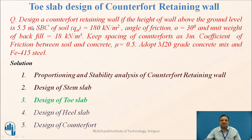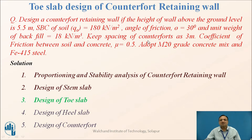The example is Design of Counterfort Retaining Wall where the height of the wall above the ground level is 5.5 meters. If the height is more than 5 meters, the cantilever retaining wall is uneconomical and we have to go for a Counterfort Retaining Wall. SBC is 180 kN/m², angle of internal friction is 30 degrees, unit weight of backfill is 18 kN/m³. Spacing of counterforts is 3 meters, coefficient of friction between soil and concrete is 0.5. Adopt M20 grade concrete and Fe415 steel.